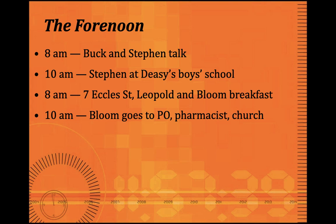At 10 o'clock, Bloom goes out to the post office and picks up an amorous letter. He is writing to a woman who calls herself Martha Clifford, posing as Henry Flower — they are exchanging love letters. After reading her letter, he goes to a pharmacist and buys soap for his wife and orders her lotion. Then he goes to a Catholic church, desperately searching for some solace and comfort in life, which he does not find there anyway.